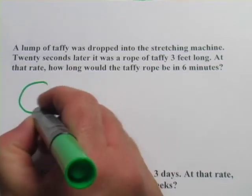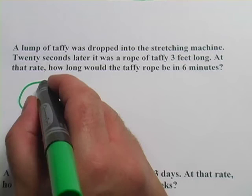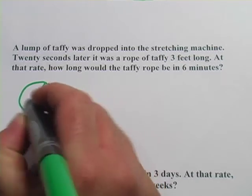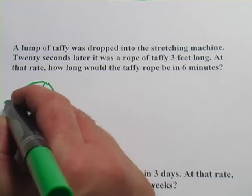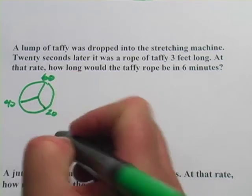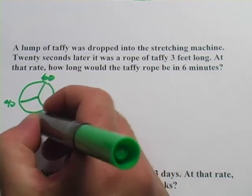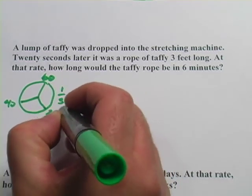If I think about a minute on a clock, 20 seconds is down here, and then I have 40 seconds over here, and I have 60 seconds up here. So that's really one-third of a minute is 20 seconds.